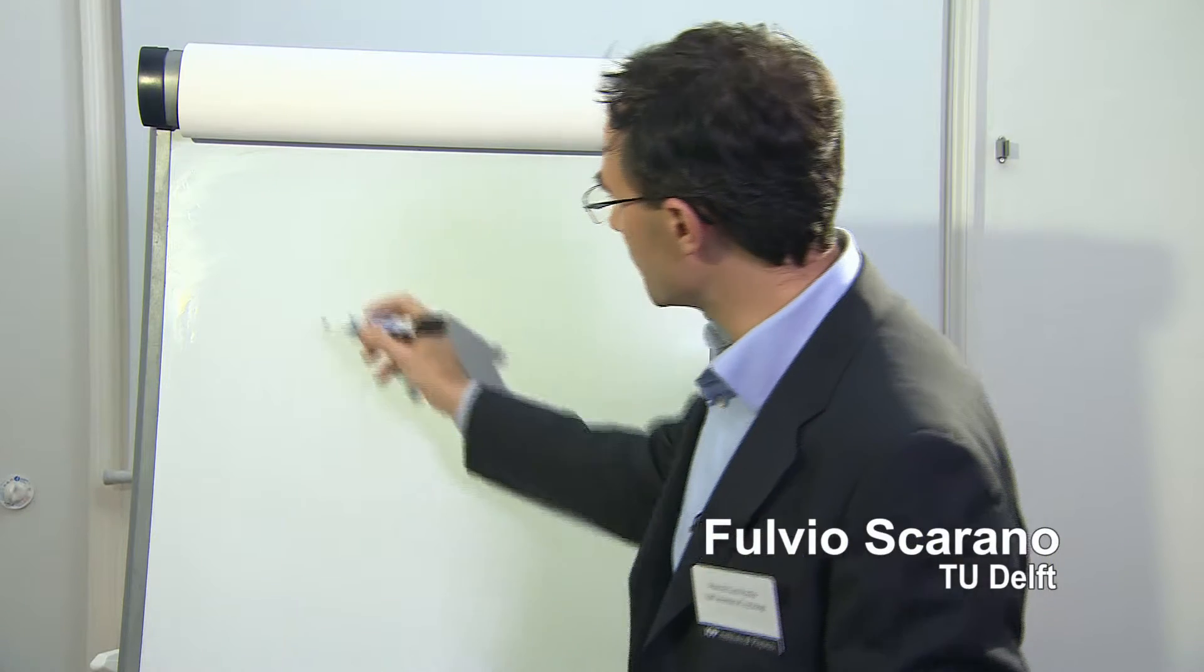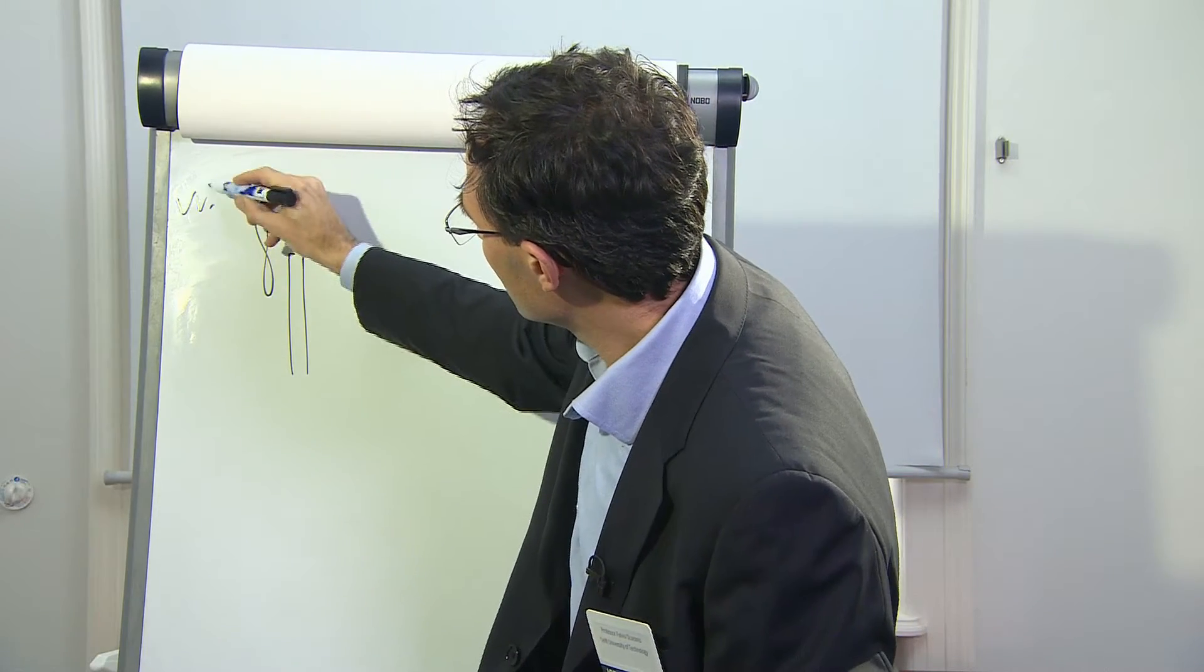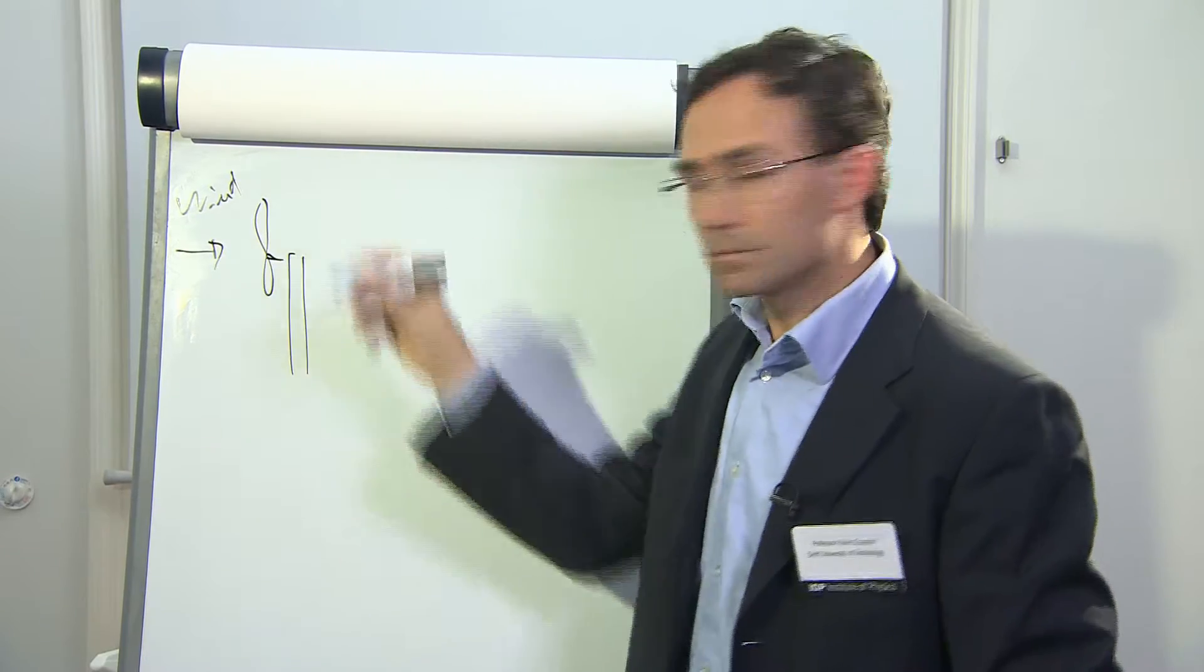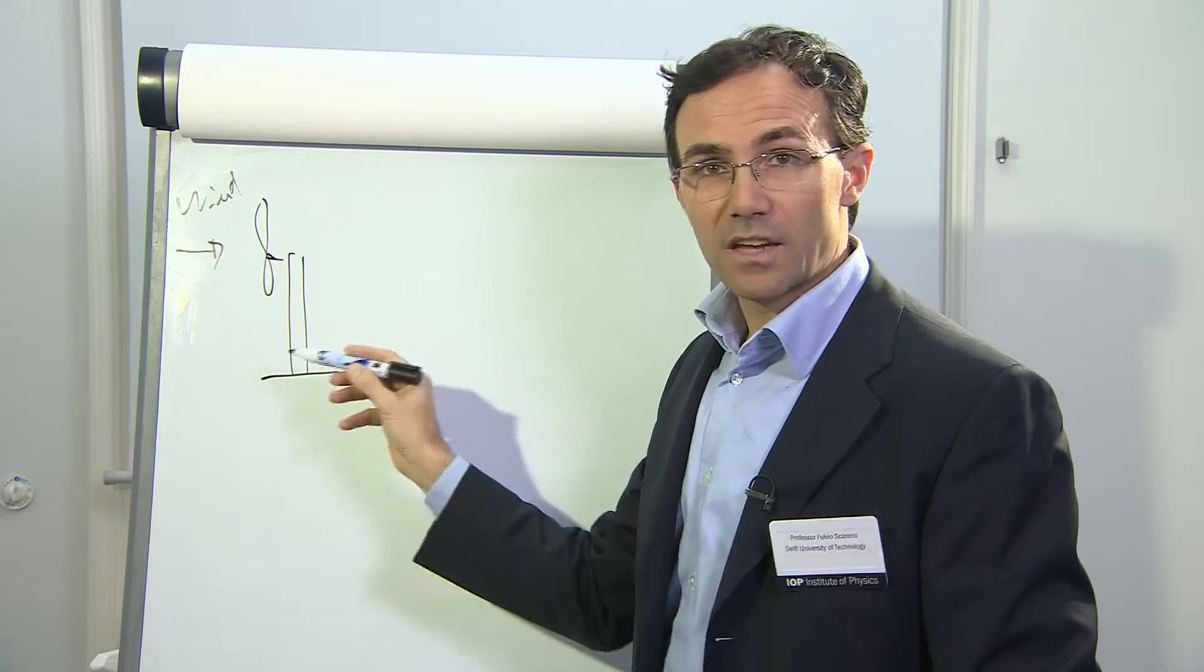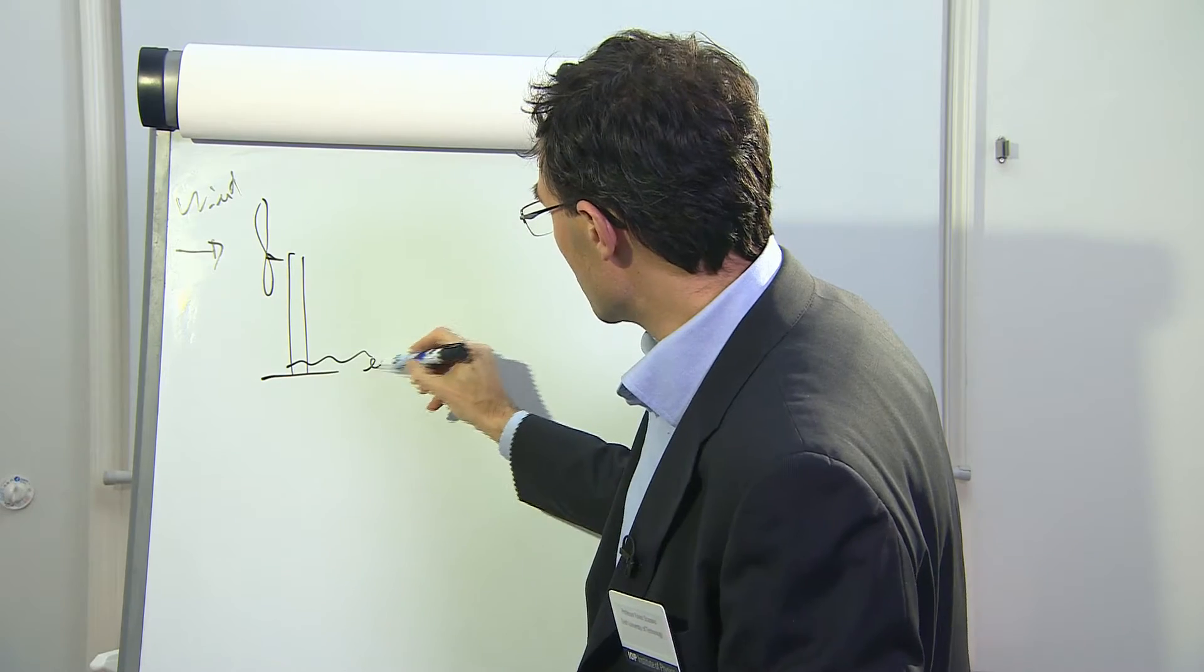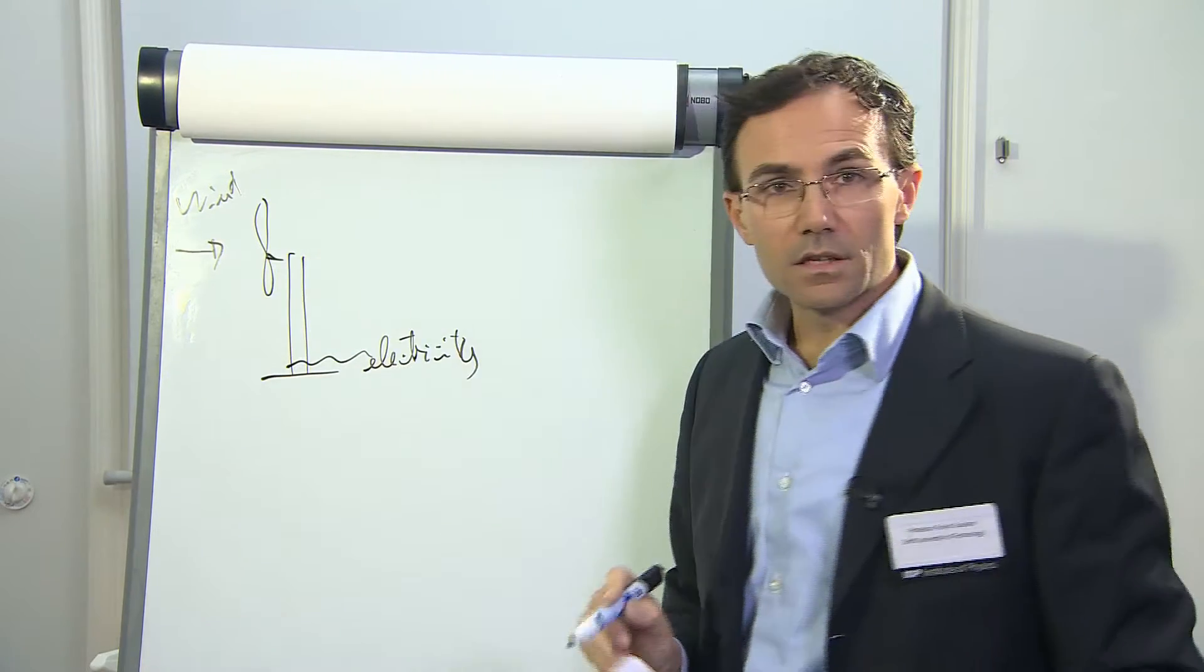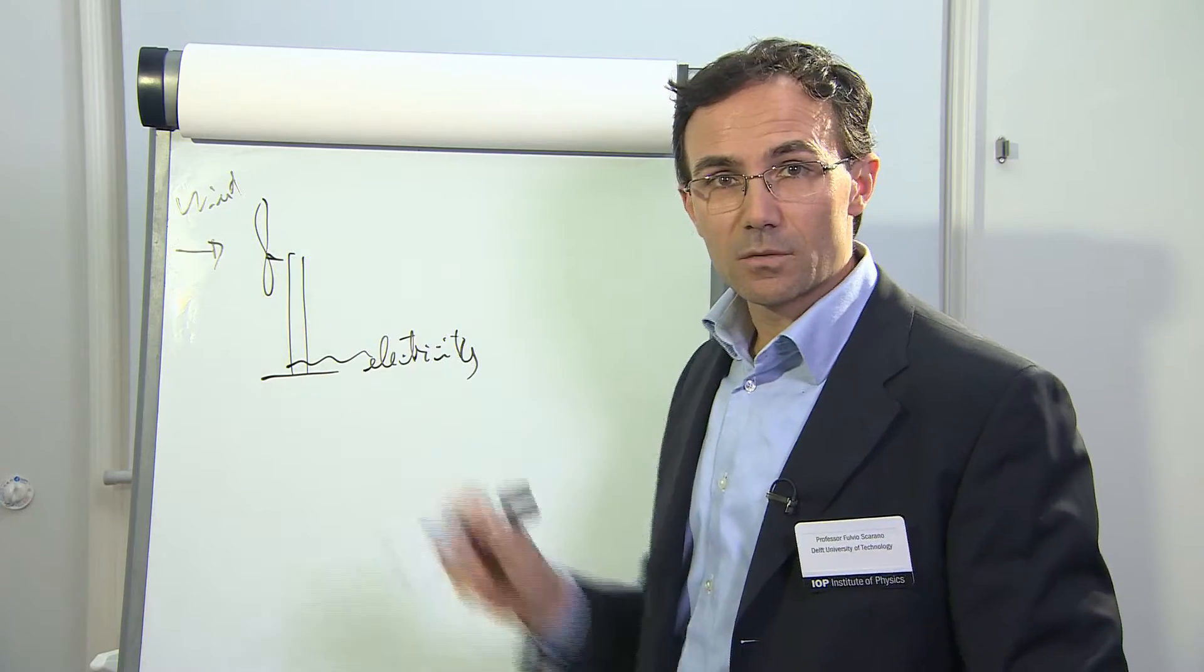The operating principle of a wind turbine is that we capture a cross-section of the wind from a rotor with blades and we convert part of the kinetic energy of the atmosphere into mechanical energy available at the hub that will eventually produce electricity. This happens through the aerodynamic interaction of the blades with the stream.